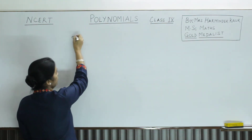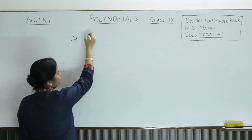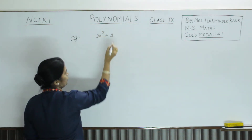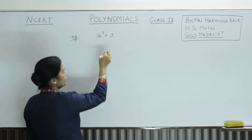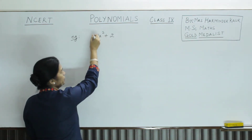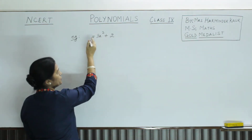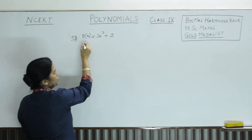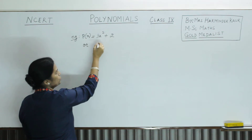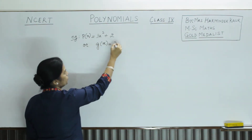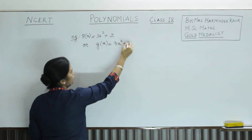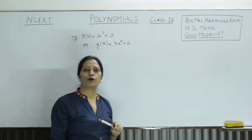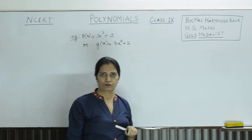For example, consider the polynomial 3x squared plus 2. We can see what is the variable here — it is the variable x. So we will write P(x). Sometimes we also write it as g(x). So when x appears in the bracket like this, we say it is a polynomial in x variable.